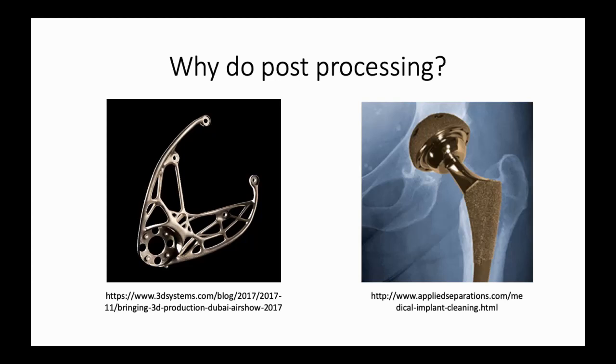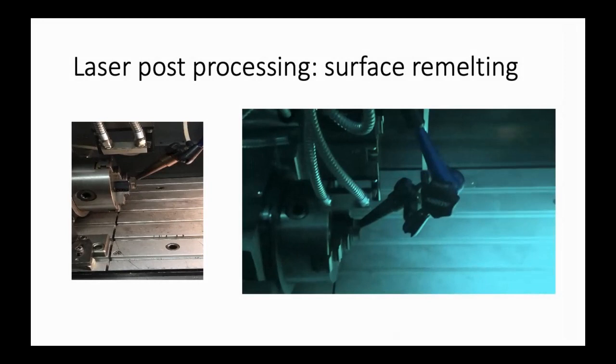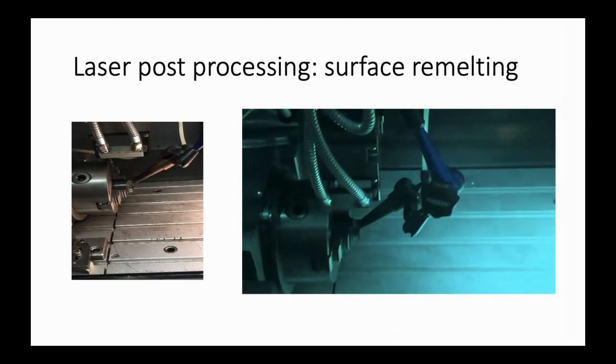One of the post-processing options is surface remelting. This is done with a laser scanning the surface of the part in order to decrease the surface roughness. The metal becomes liquid again and fills the valley and cavities, achieving in the end a shiny surface. This is why this post-process is also known as laser polishing.